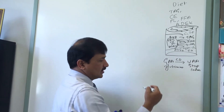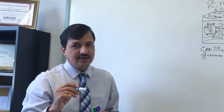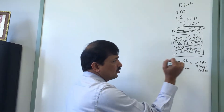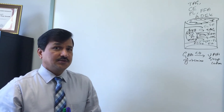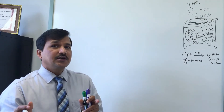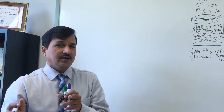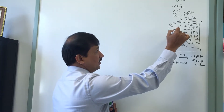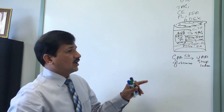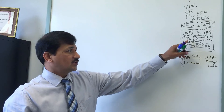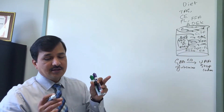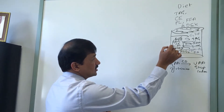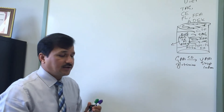Cytidine deaminase converts CAA (coding for glutamine) to UAA, which is a stop codon. This occurs when 48% of the ApoB100 mRNA has been translated, which is why the resulting protein is called ApoB48. ApoB48 then takes on triacylglycerol, cholesterol ester, phospholipid, and vitamins A, D, E, and K.